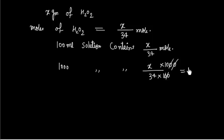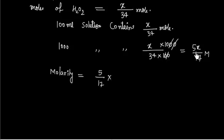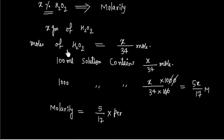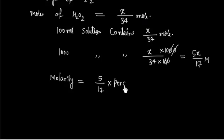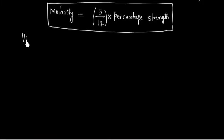So we get 5X/17 mol. If I know the percentage strength, I can calculate molarity. Molarity equals 5/17 times X, where X is the percentage strength. So we have the relationship: if percentage strength is given, we can calculate molarity by multiplying by 5/17.